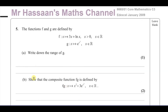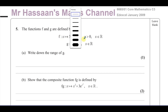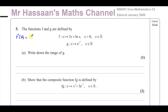So first of all, part A says the functions F and G are defined by: F is such that X maps to 3X plus ln X — this notation is the same as saying F(X) = 3X + ln X. And G(X) = e to the power of X squared. They're the same kind of thing, just written in a slightly different format.